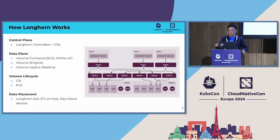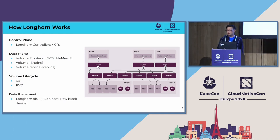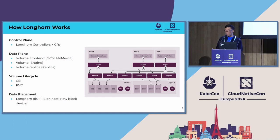For the data plane, the primary function is to understand requests from the control plane — when to manage or create volumes, when to perform operations like expansion or trim. For the volume itself there are three components: the volume front end (iSCSI for V1, NVMe over Fabrics for V2), the volume engine as the entry point for I/O with a control part, and downstream volume replicas for data placement. Your data is saved into replicas, and you can decide how many replicas you want — by default Longhorn uses three replicas, but it depends on your use case.